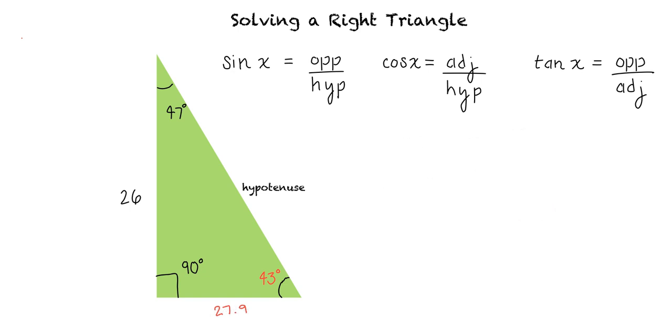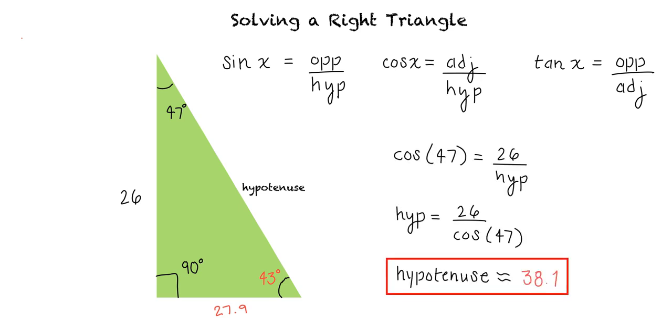Next, we will solve for the hypotenuse. One of the ways we can do this is by setting up another trig ratio. This time, we will use cosine. Our hypotenuse is approximately 38.1.